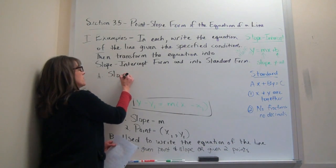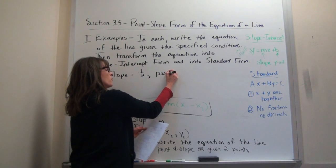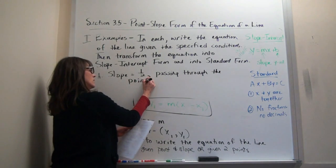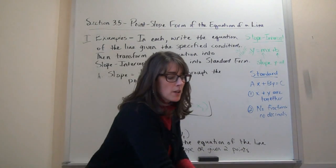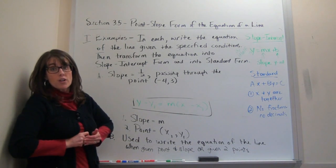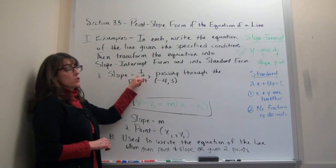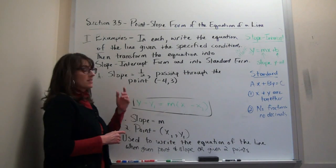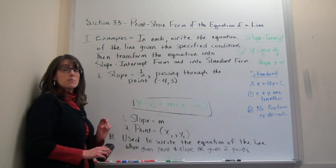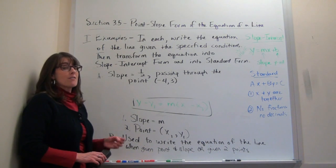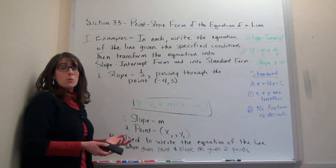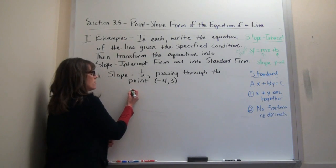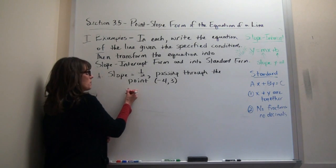In this first example, we are given a slope of one half and the line passes through the point negative four comma three. When you're given a point and a slope, use point-slope form — that's exactly why we have it. To help memorize it, write it down every single time you use it, then plug your numbers in. Here is the point-slope form: y minus y1 equals m times (x minus x1).